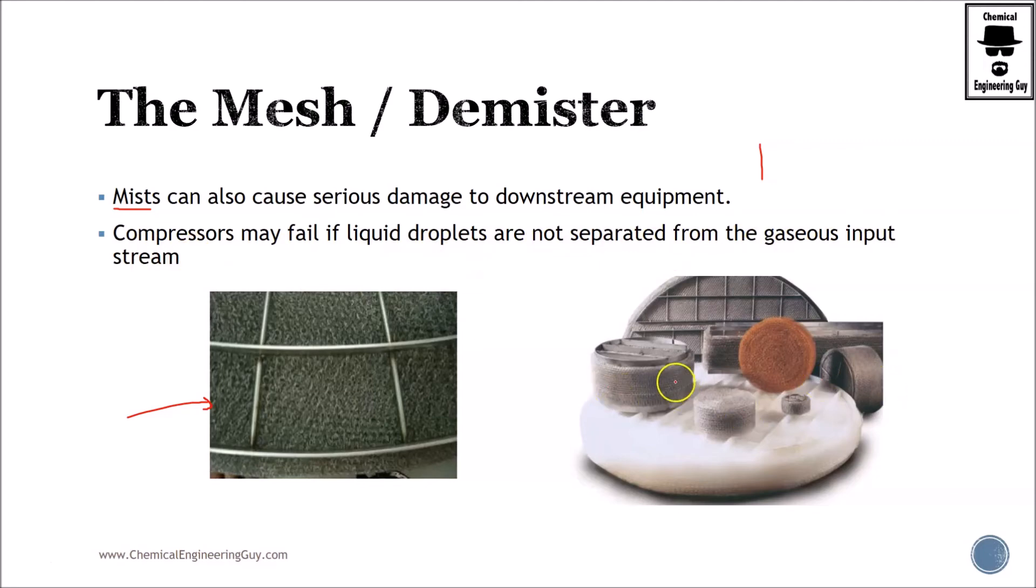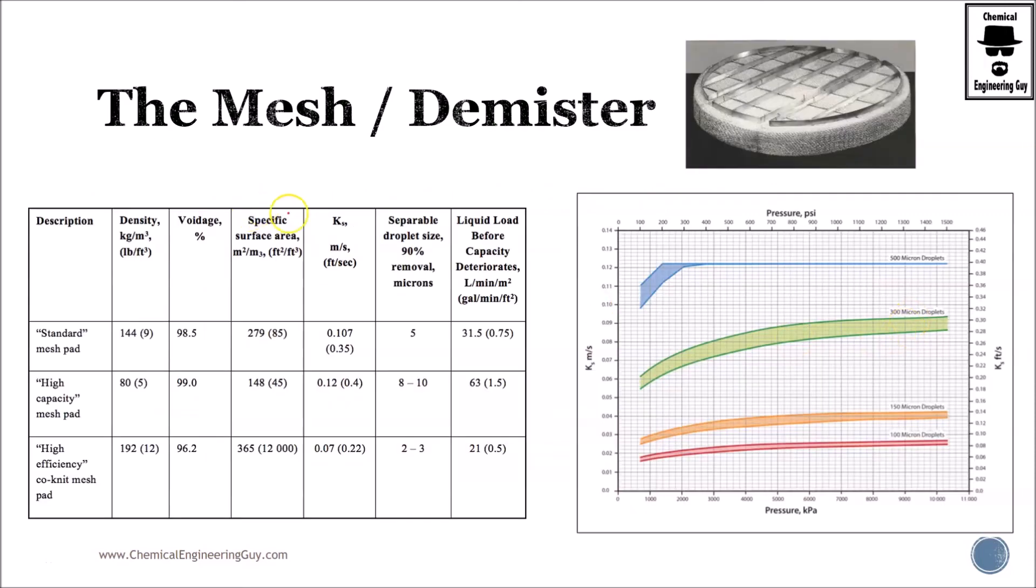Here are examples: plastic ones, wire ones—I don't know why this is metallic, but these are some examples. I don't want to get too technical because it's not our task right now to select the demisters.